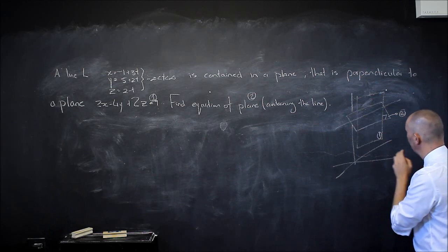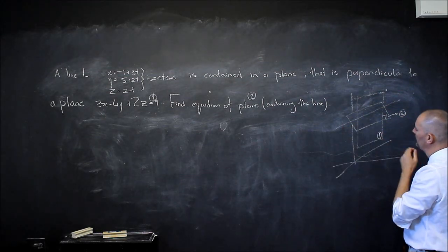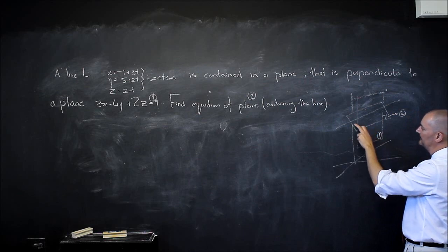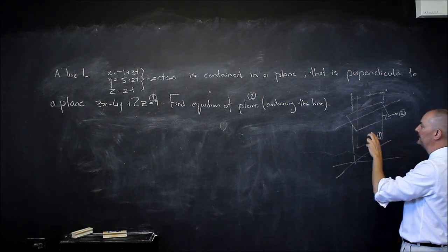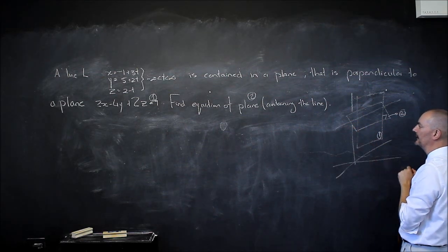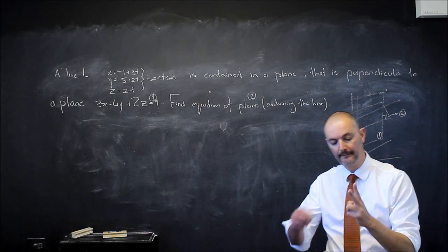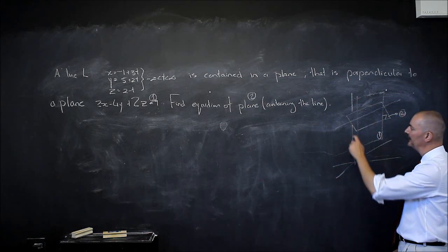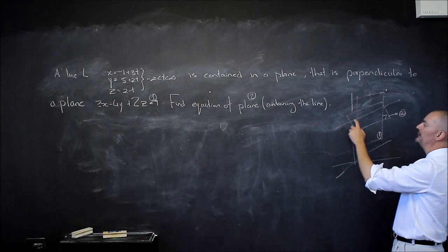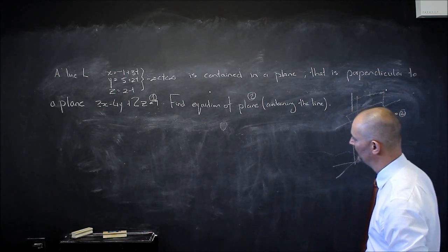Think about it. A vector parallel to the line is parallel to plane 2 — it won't help directly. But the normal to plane 1 is perpendicular to plane 1. Because plane 2 is perpendicular to plane 1, the normal to plane 1 is parallel to plane 2. So now I have two vectors parallel to plane 2. The cross product of those two vectors will be perpendicular to plane 2 — that is, a normal to plane 2. Then all I need is a point on the line, which lies on the plane, giving me a point and a normal to write the point-normal form.